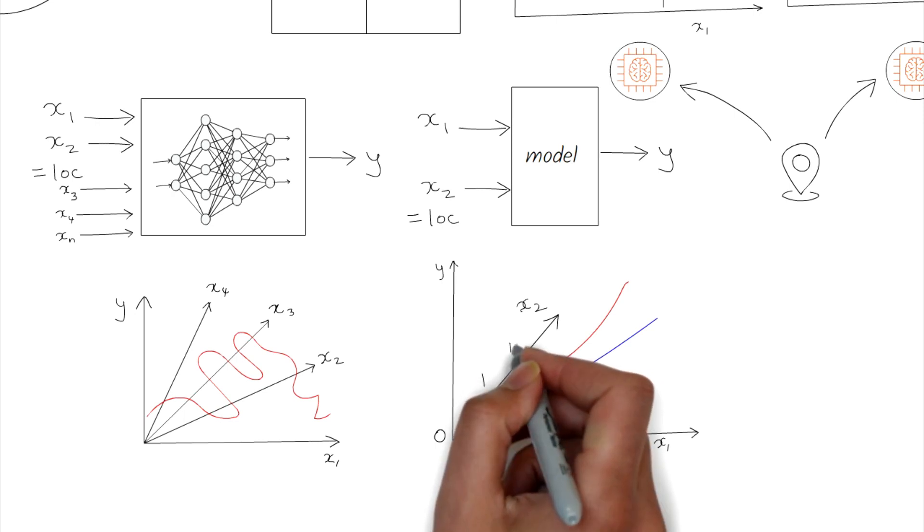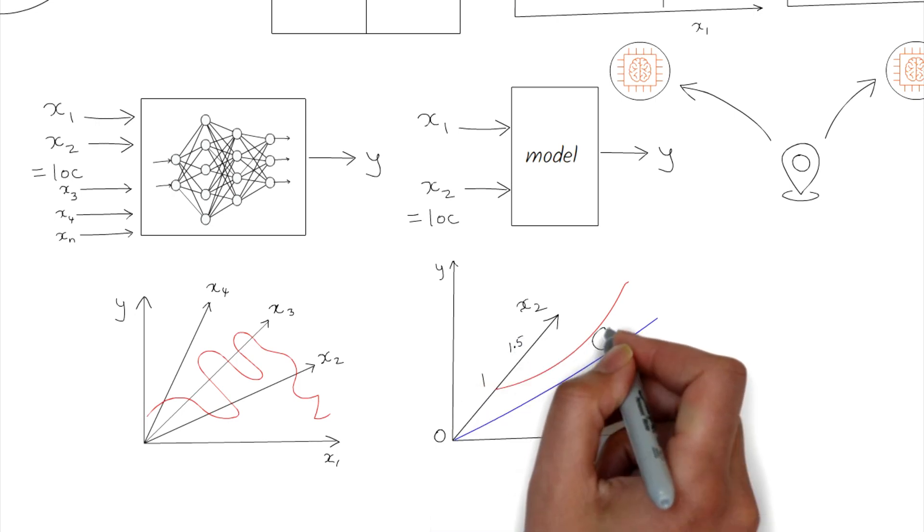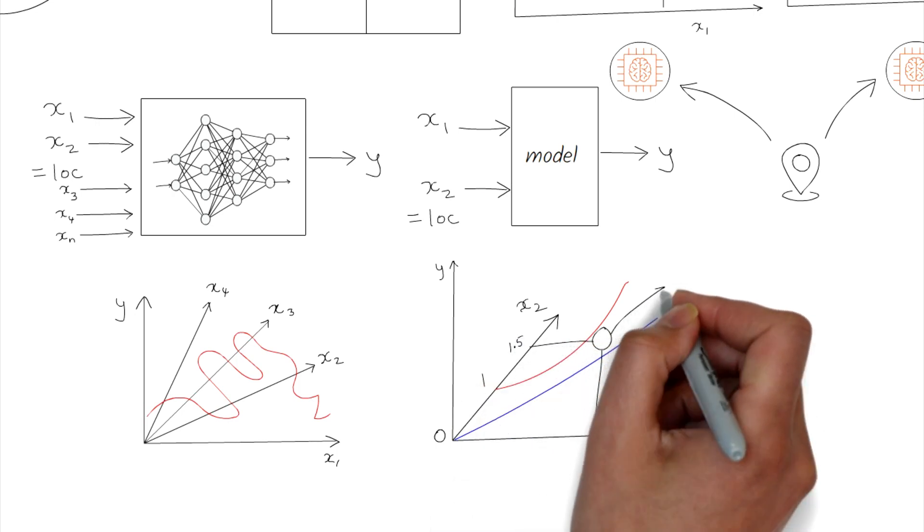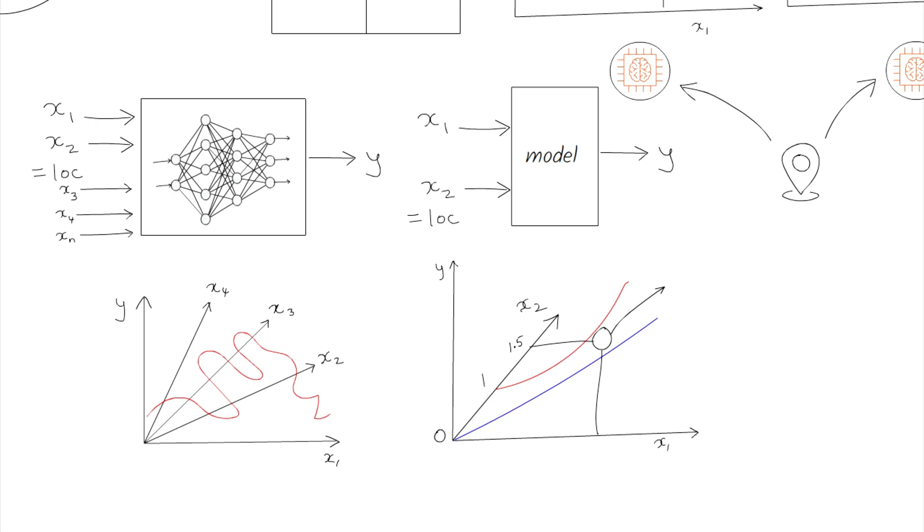Even in the simple model, if you had an erroneous input—let's say 1.5 for location—then it's neither Lakewood nor Bloomfield, and the model will not know what to do with that and it'll probably give you an arbitrary price.